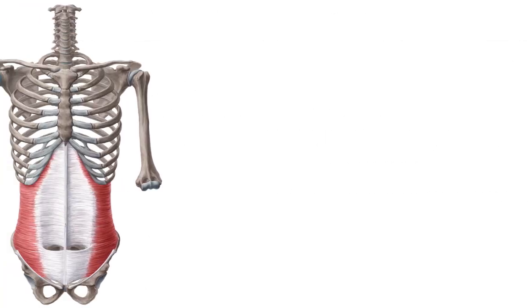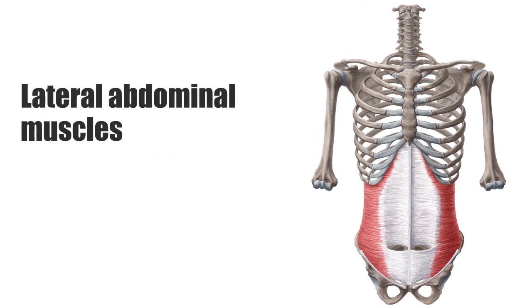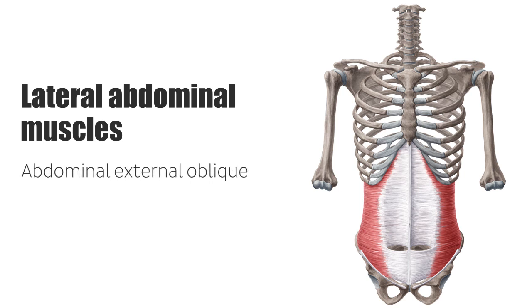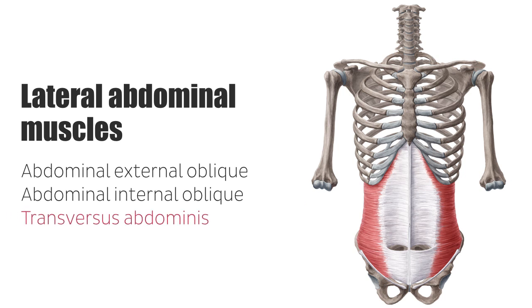Hello again, it's Matt from Kenhub, and in this tutorial we will discuss the transversus abdominis. The lateral abdominal muscles are part of the tension system of the abdominal wall musculature. Together with the anterior abdominal muscles, they form the musculature of the anterior body wall. The lateral abdominal muscles are made up of the abdominal external oblique muscle, abdominal internal oblique muscle, and the transversus abdominis muscle, which is the focus of this short video tutorial.